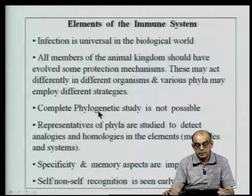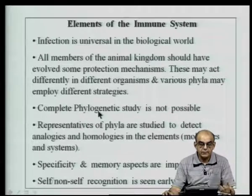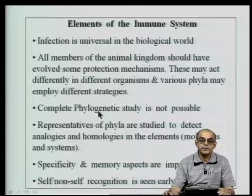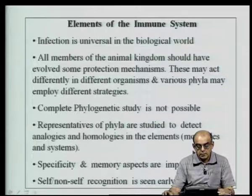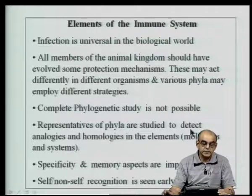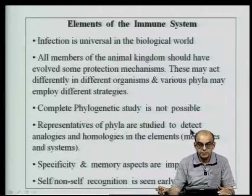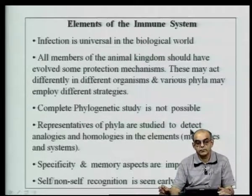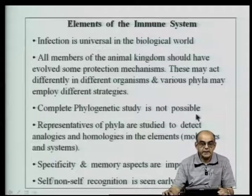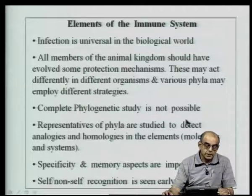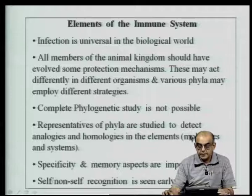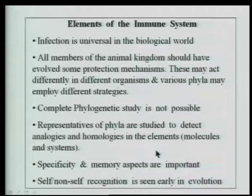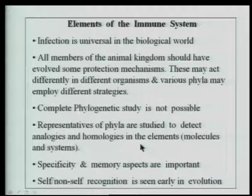These protection mechanisms may work differently in different organisms and various phyla, and different strategies may be employed for inactivating the pathogen in question. During these evolutionary studies, a complete phylogenic study of all members to see what sort of immune molecules are involved is practically impossible. Therefore, representatives of phyla are studied in order to detect analogies and homologies in the elements of the immune system.